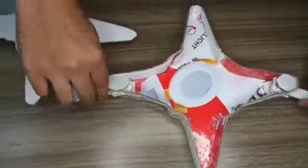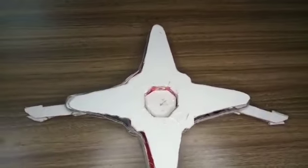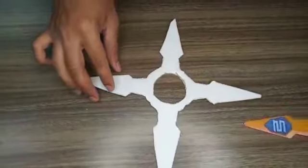Now glue the top and the bottom part. Now cut the golden star part and trace it on a cardboard and cut it out.